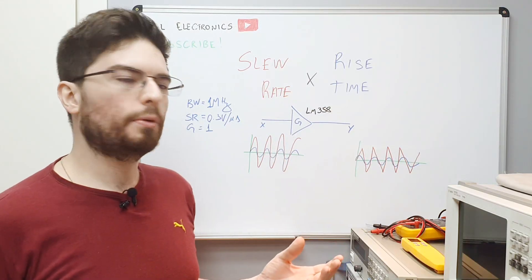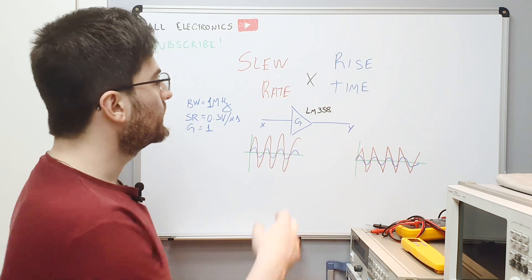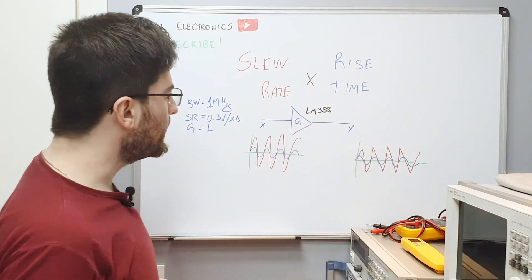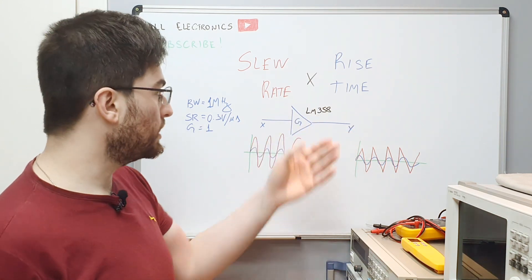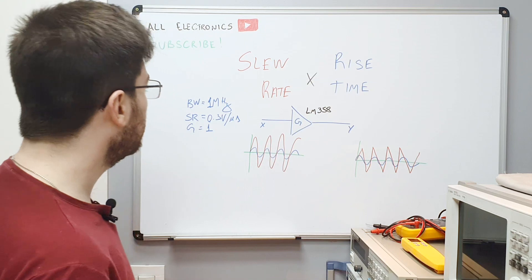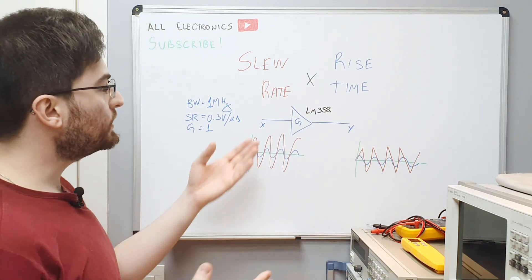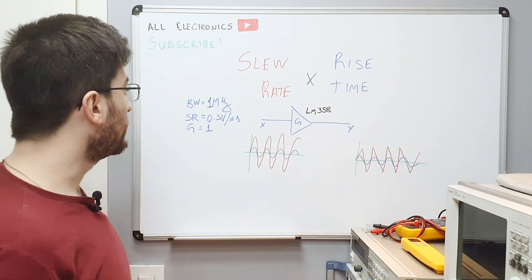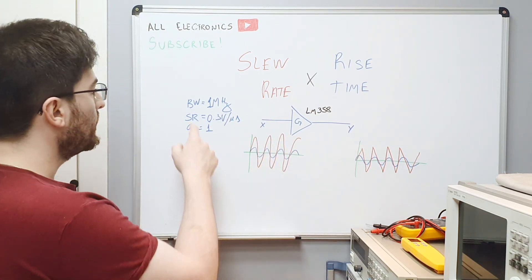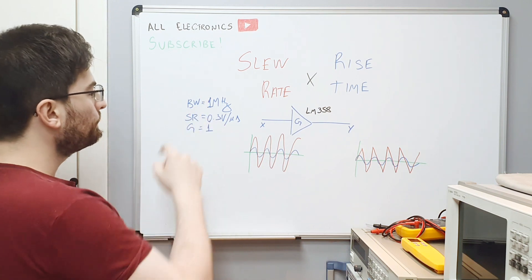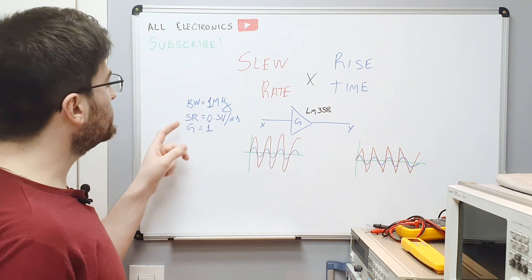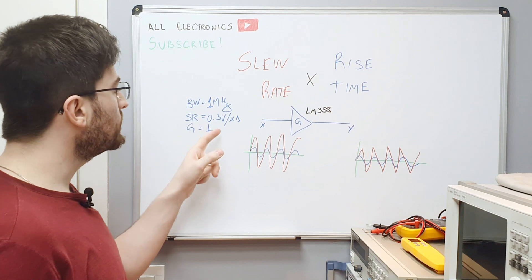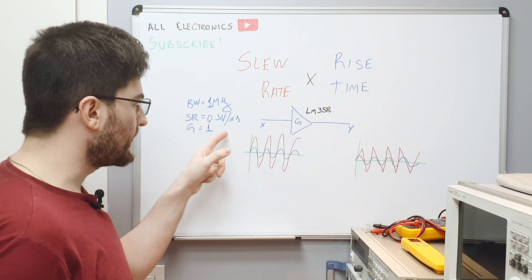Here you have a practical example using an LM358 op-amp, a very common general-purpose op-amp. When it is working with a gain of 1 as a buffer, we have a bandwidth of 1 MHz and a maximum slew rate of 0.3 volts per microsecond.